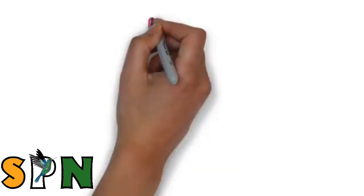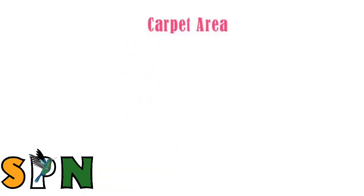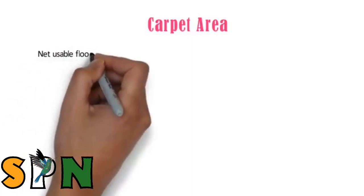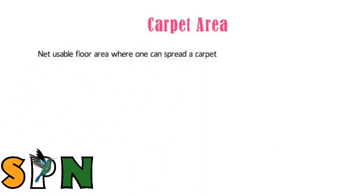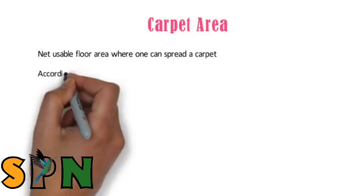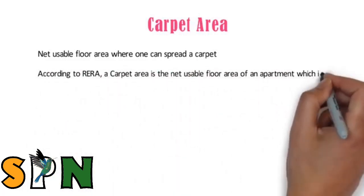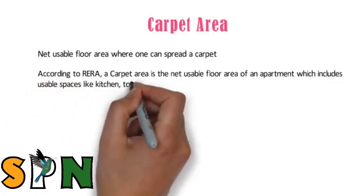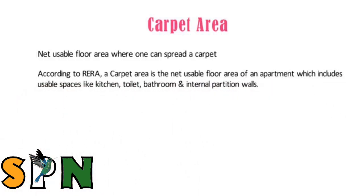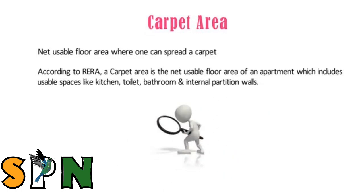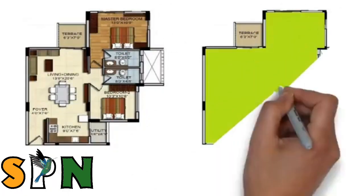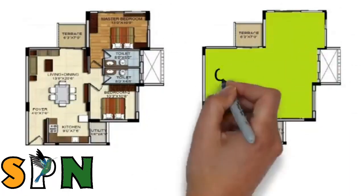So first we will start with carpet area. Carpet area, also known as net usable floor area, is the space where one can spread a carpet. According to RERA, a carpet area is the net usable floor area of an apartment which includes usable spaces like kitchen, toilet, bathroom and internal partition walls. This brings clarity which was not there before RERA was introduced. For your reference, this is the plan of a 2BHK flat and this is the carpet area marked in green color.